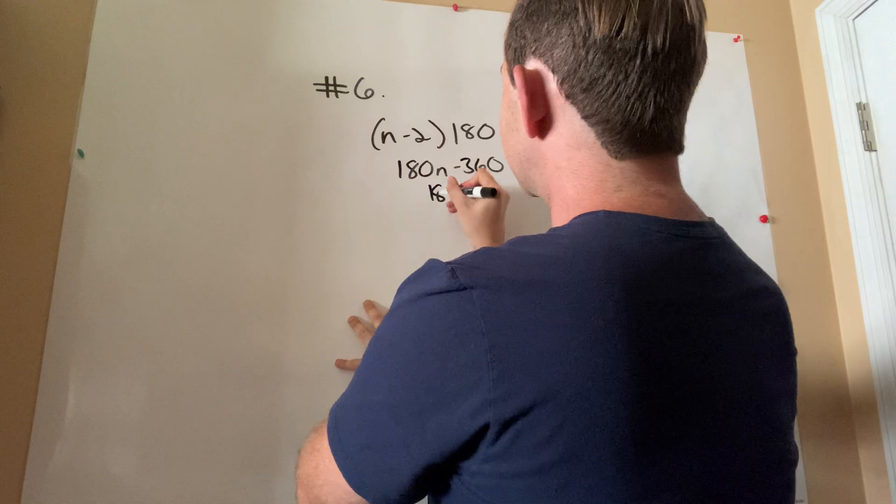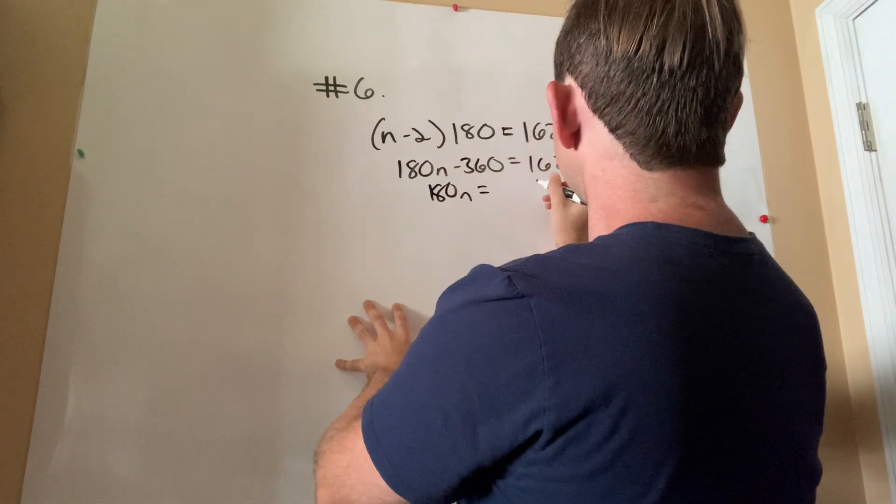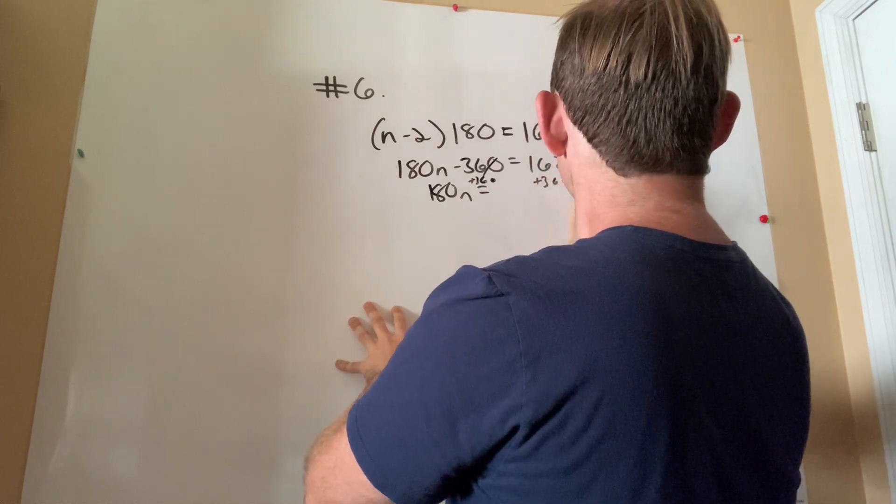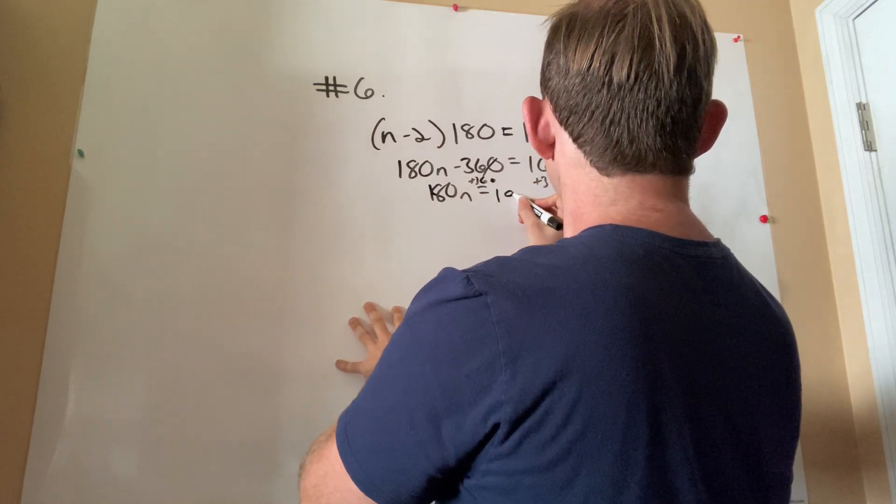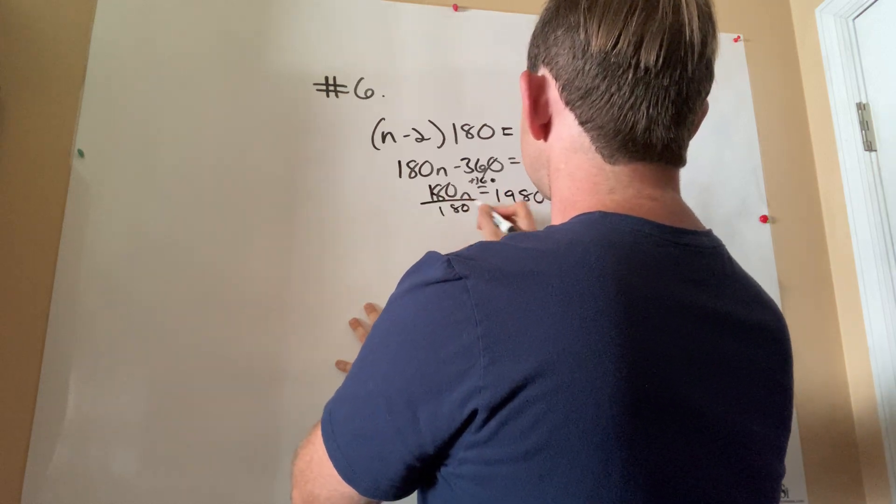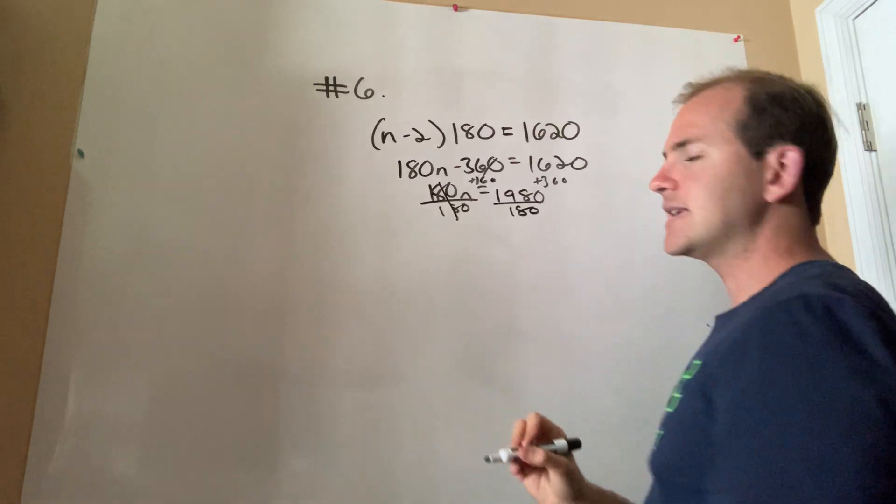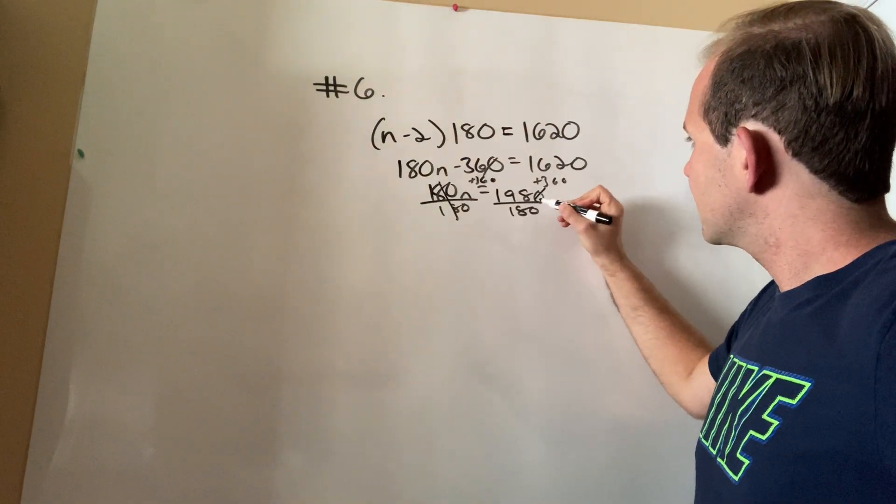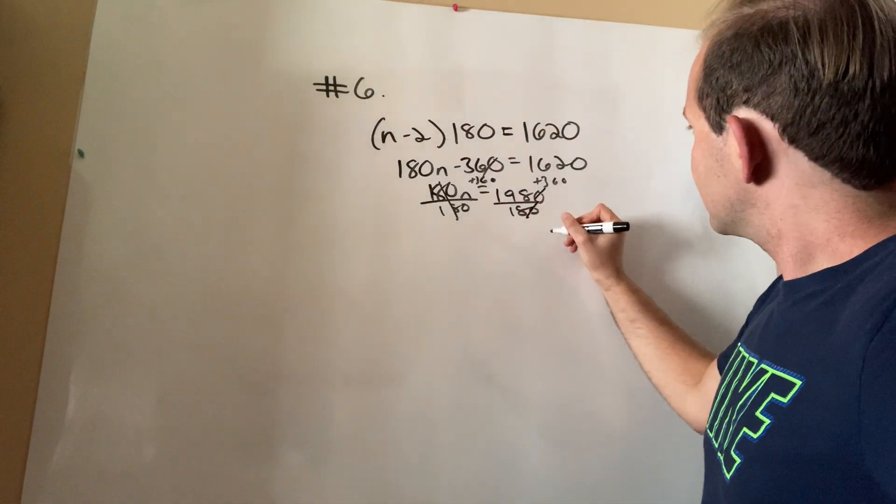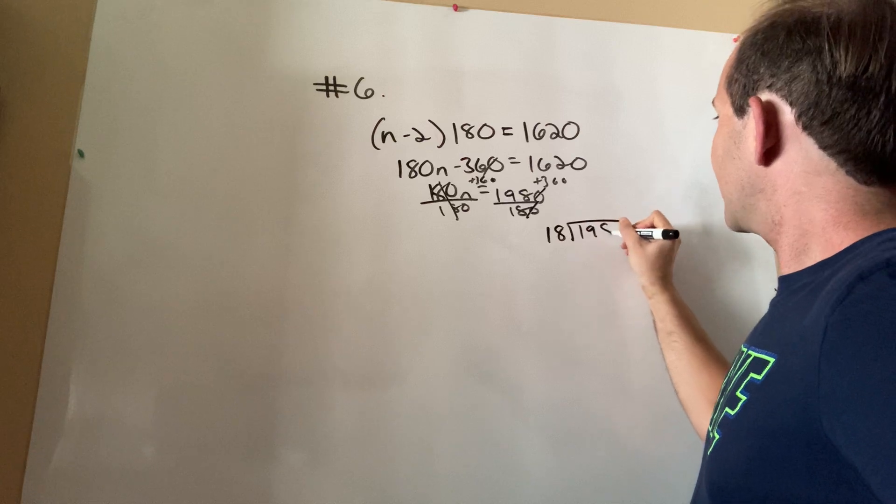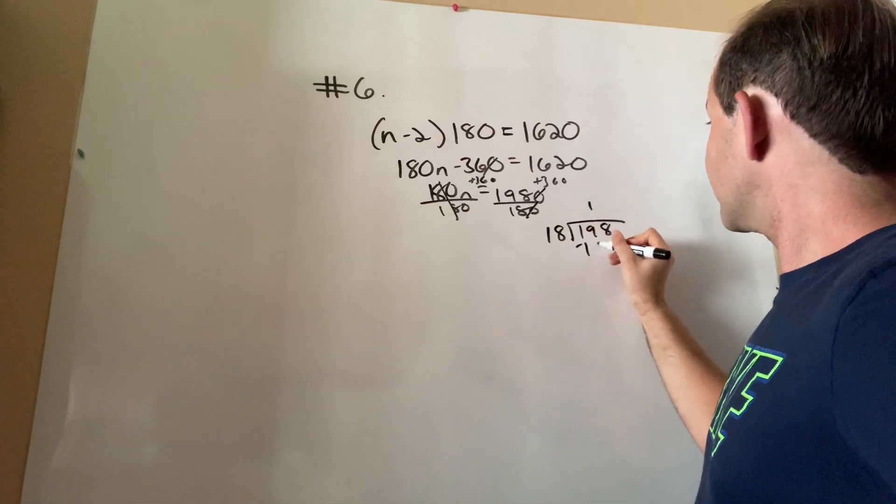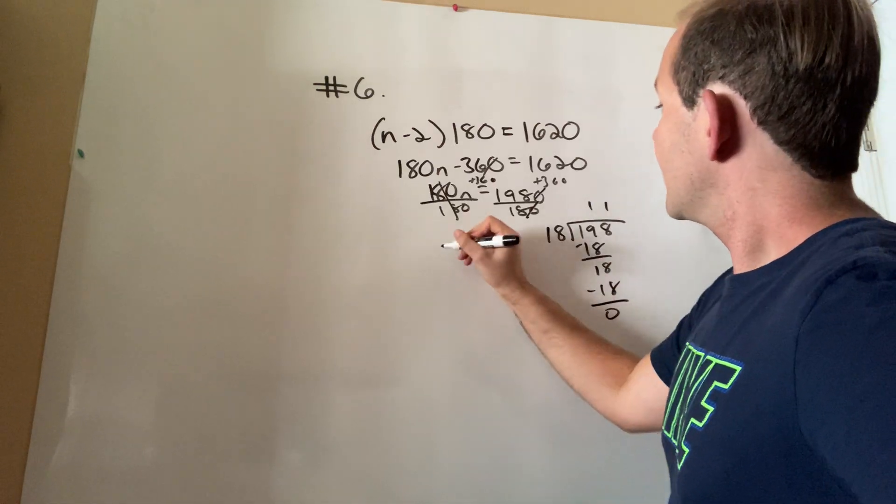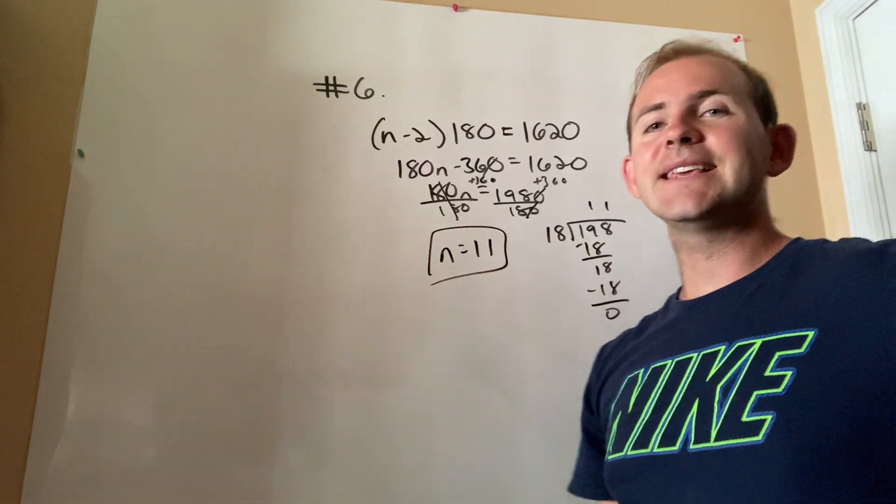From there, I would add 360 to both sides. So I get 180n equals, let me see, even I have to show my work sometimes. 1,980 divide both sides by 180. Now I want to make sure you guys see some old tricks from elementary school. You guys remember how if there was a 0 and a 0, I could kind of cross them out? And then that makes the division much easier to do by hand. 18 goes into 19 once, subtract 18, remainder 1, bring down the 8. So in this case, it's actually a very simple problem. n equals 11.